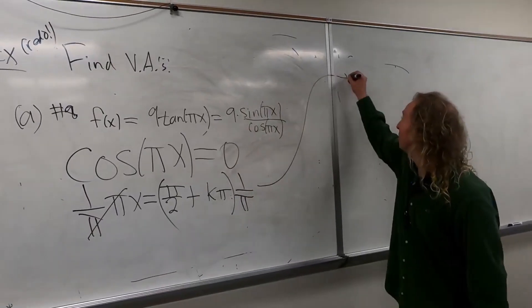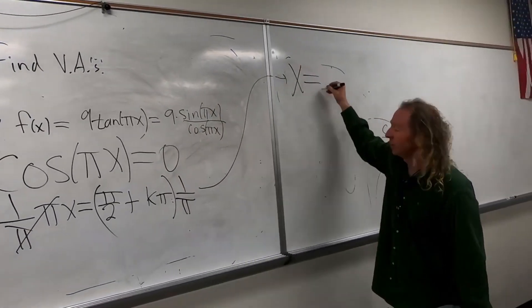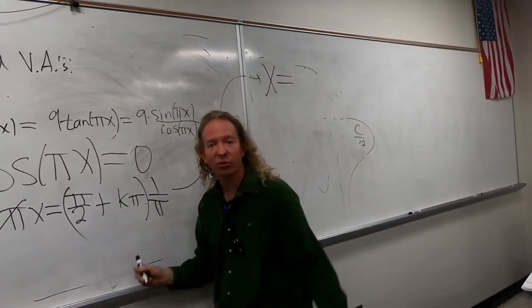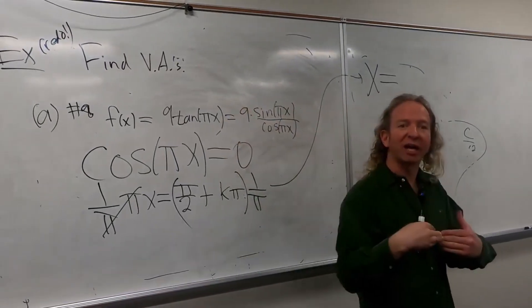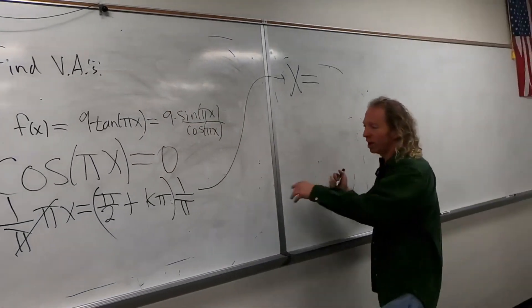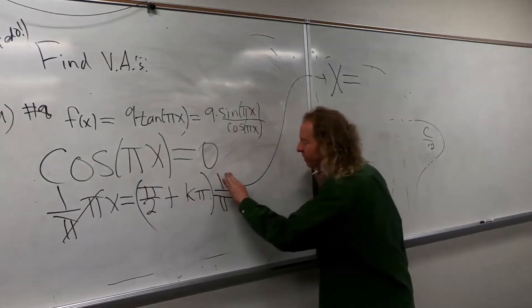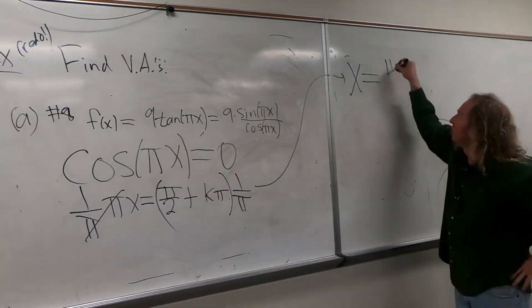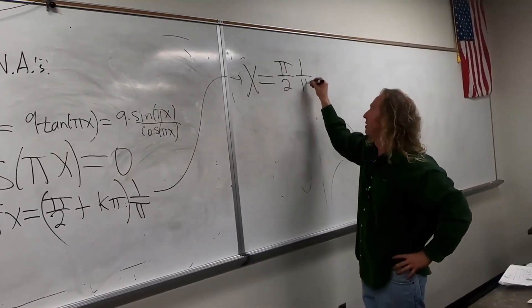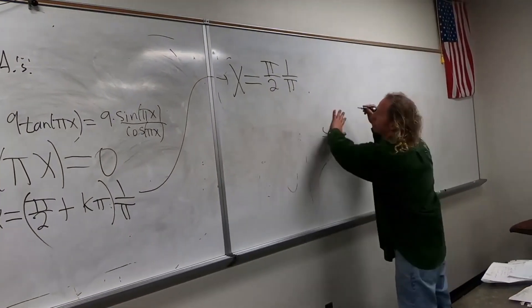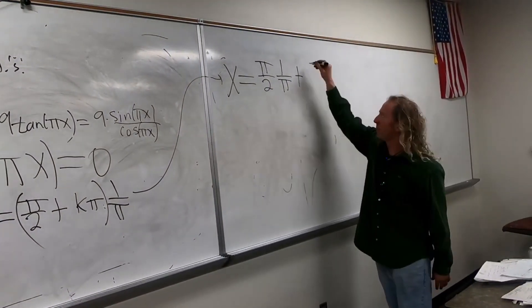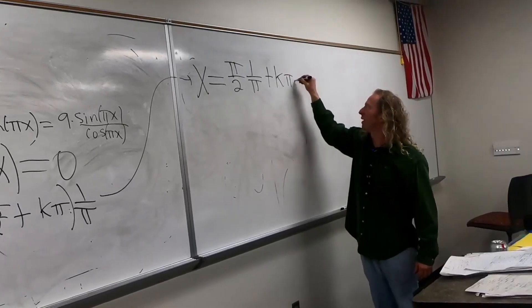These cancel. So this is equal to x equals, right? X equals. It's really important to write the x because it's a line. Okay? It's a vertical asymptote. I'm going to show every step. Pi over 2 times 1 over pi, so pi over 2 times 1 over pi plus k pi times 1 over pi.